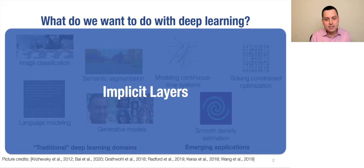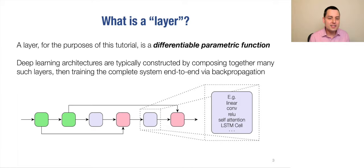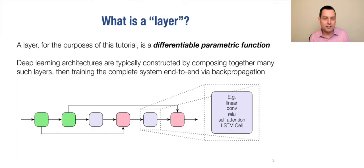So to start off with, what is a layer? For the purposes of this tutorial, a layer is going to be a differentiable parametric function. The way we typically construct deep learning architectures is we hook a bunch of these things together. These layers can be simple things like linear layers or convolutions, ReLUs, or more complex things like LSTM cells. We hook these all together and then train the whole system end to end via backpropagation.